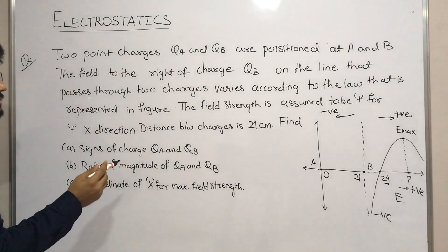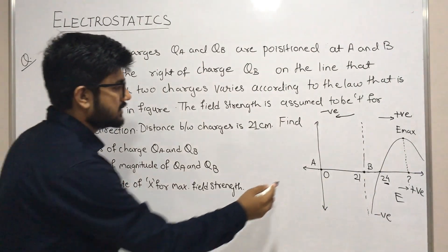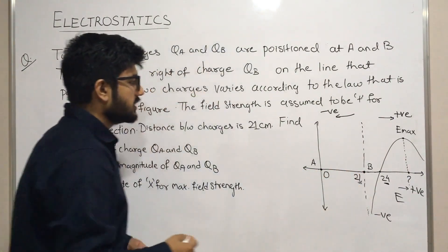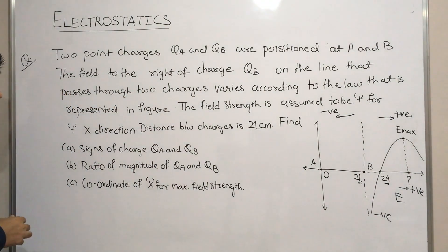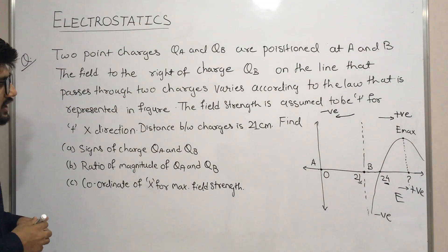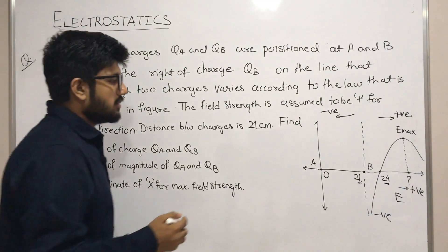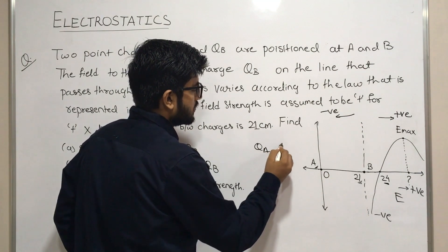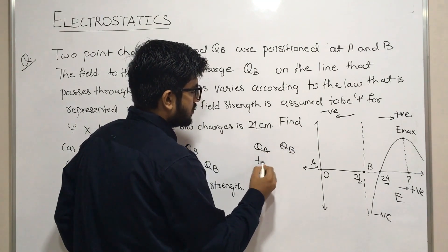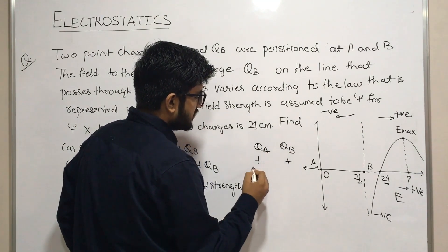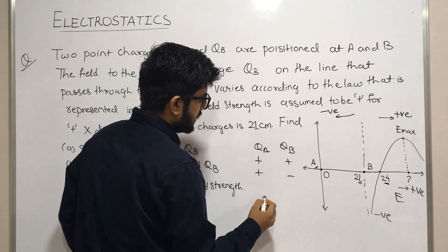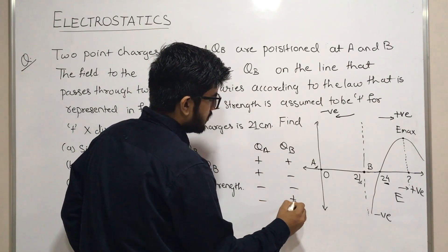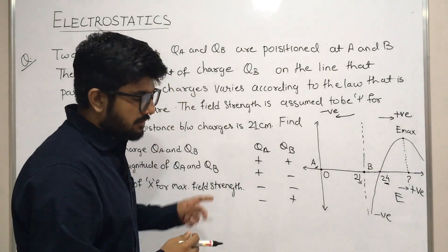Now let's see the distance between the charges. We have given charge a and charge b with a distance of 21 cm. We need to find the signs of the charges — find qa and qb. So now let's see what qa and qb can possibly be.